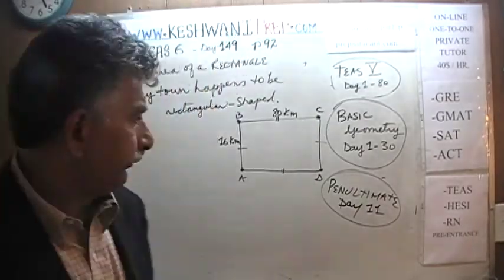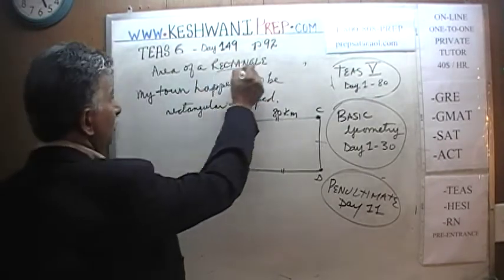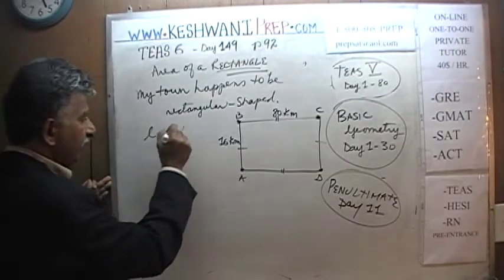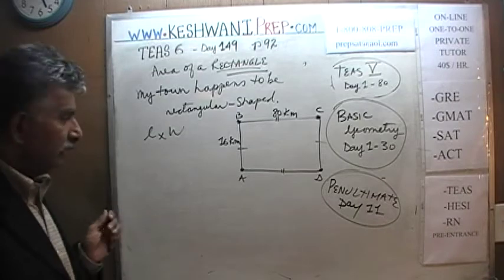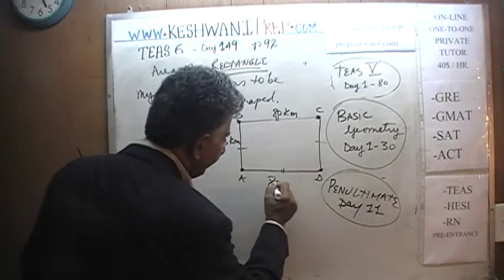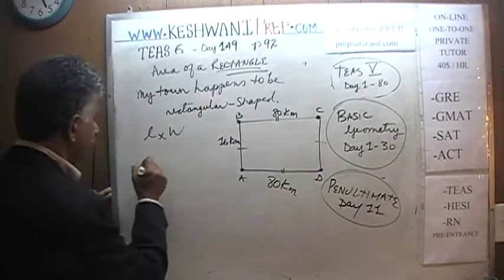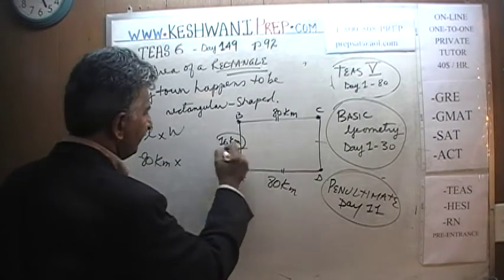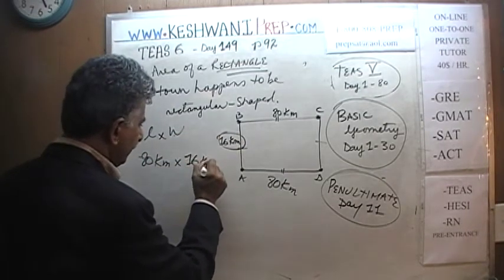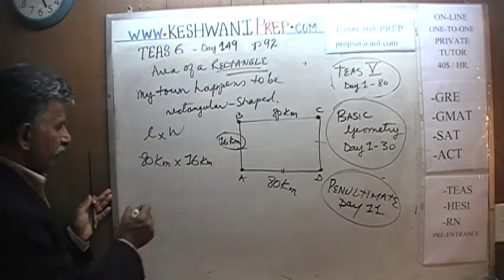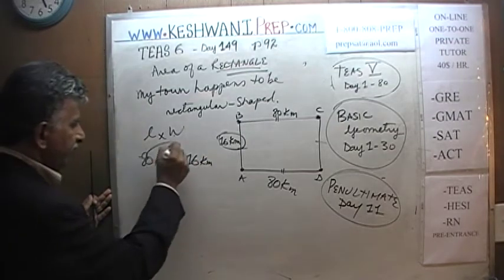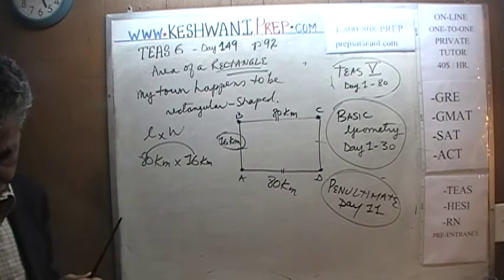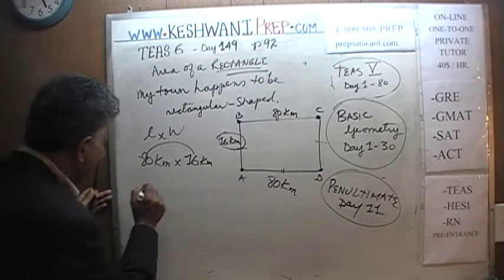Area of a rectangle is simply length times width — nothing to it. The length here is 80 kilometers and the width is 16 kilometers. So first, we have to multiply 80 times 16.